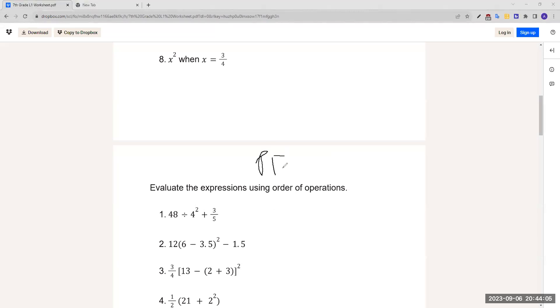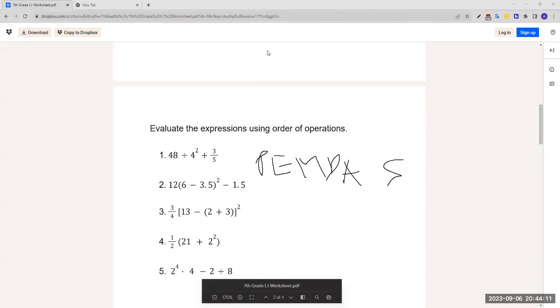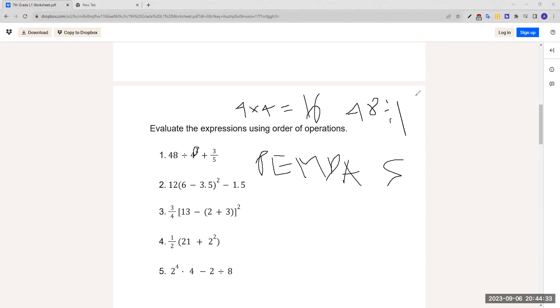For number 1, we have 48 divided by 4 squared plus 3 over 5. We see that there's the exponents, there's 1 right here. There's no parentheses, so that's what we have to do first. 4 squared is 4 times 4, which is 16.